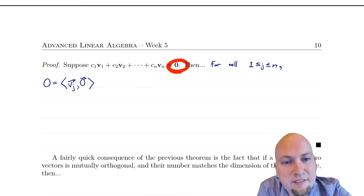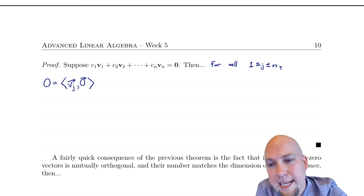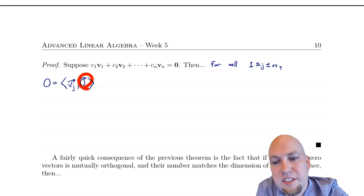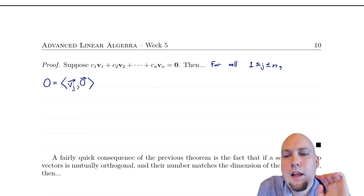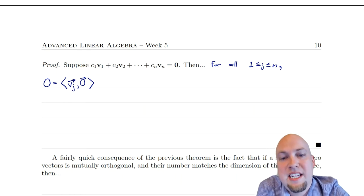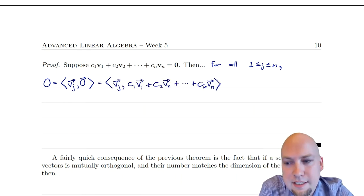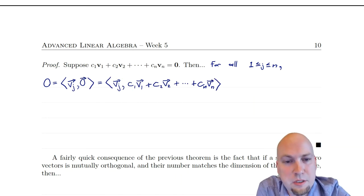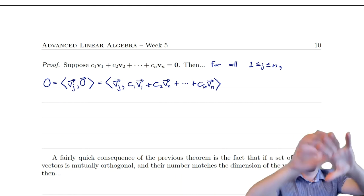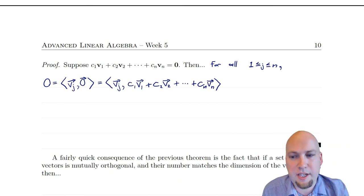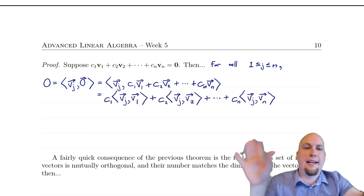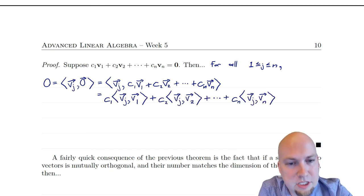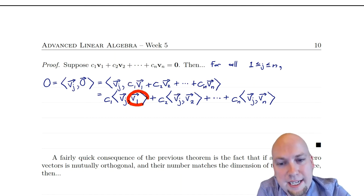Starting on the right-hand side: if I take the inner product with v_j of the right-hand side — which is some vector inner product with the zero vector — I get zero. On the left-hand side, I get v_j inner product with that linear combination, substituting out that zero equals the linear combination. Now I use properties of inner products to break that apart. Linearity in the second entry of the inner product tells me I can split the linear combination outside of the inner product: it's c_1 times the inner product of v_1 with v_j, plus c_2 times the inner product of v_2 with v_j, and so on.